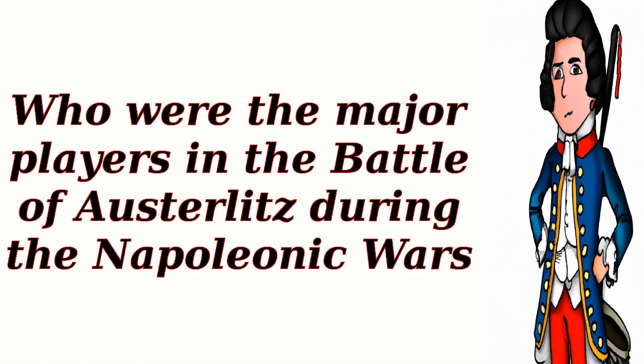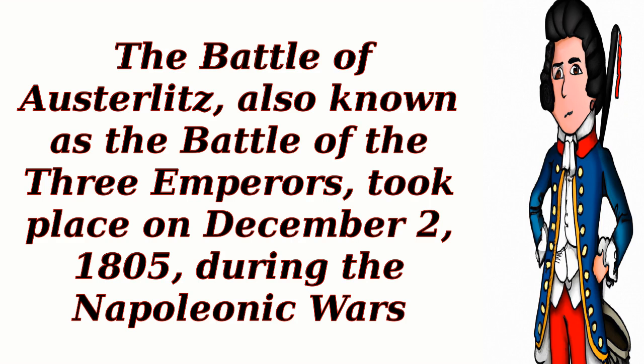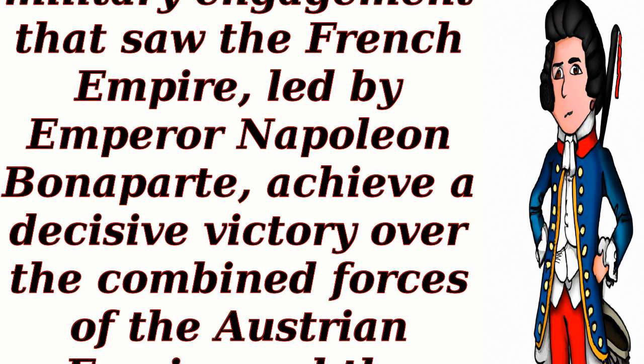Who were the major players in the Battle of Austerlitz during the Napoleonic Wars? The Battle of Austerlitz, also known as the Battle of the Three Emperors, took place on December 2, 1805, during the Napoleonic Wars. It was a significant military engagement that saw the French Empire, led by Emperor Napoleon Bonaparte, achieve a decisive victory over the combined forces of the Austrian Empire and the Russian Empire.